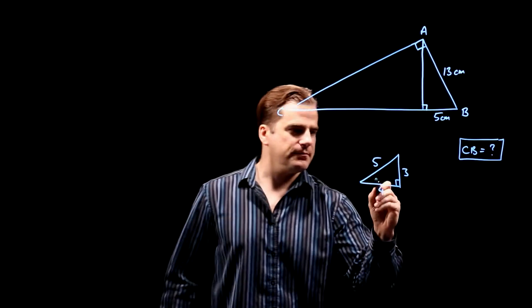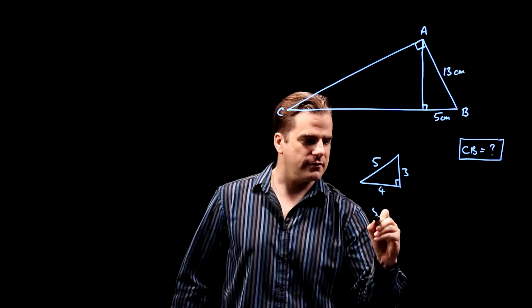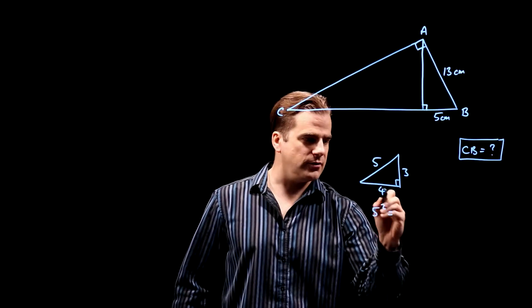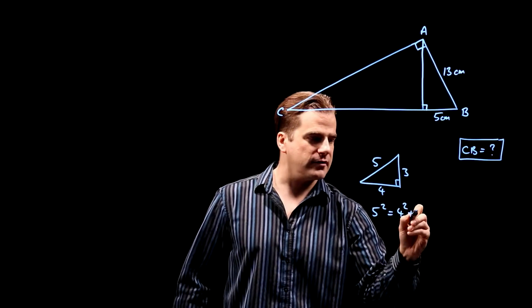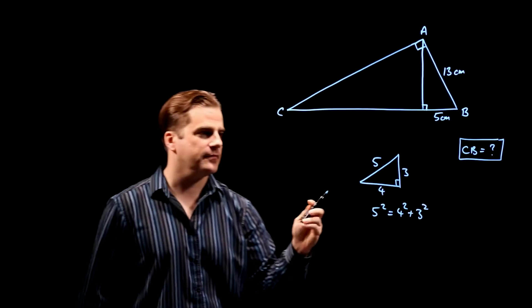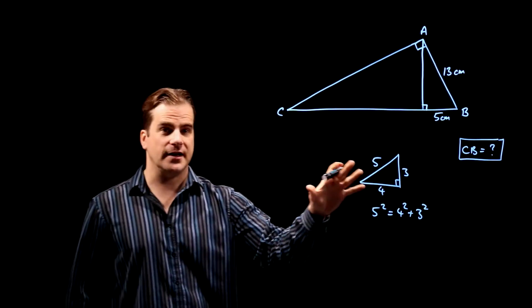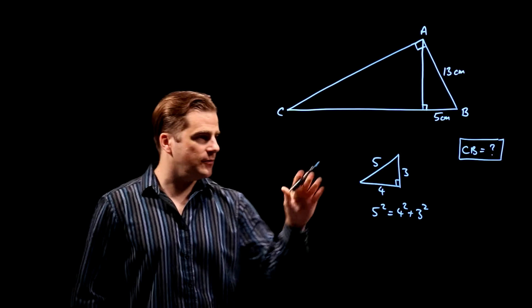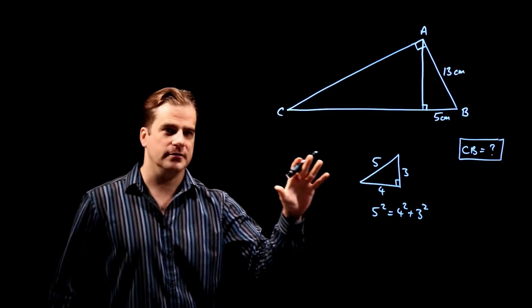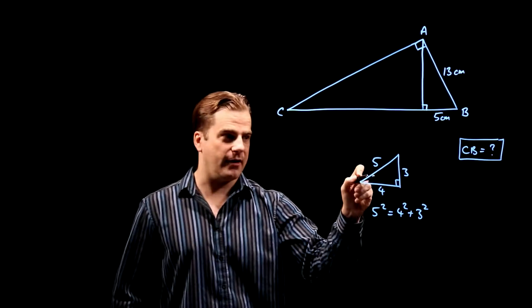Five squared is exactly equal to four squared plus three squared. All three are integers. It's really nice and neat. So you may have heard of a three, four, five triangle. If you haven't, remember it now.